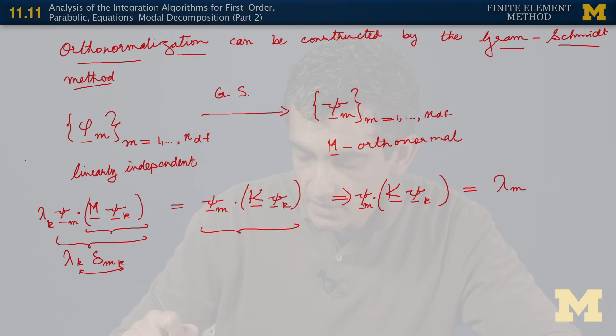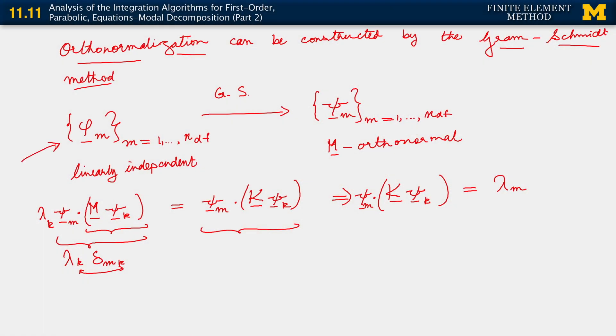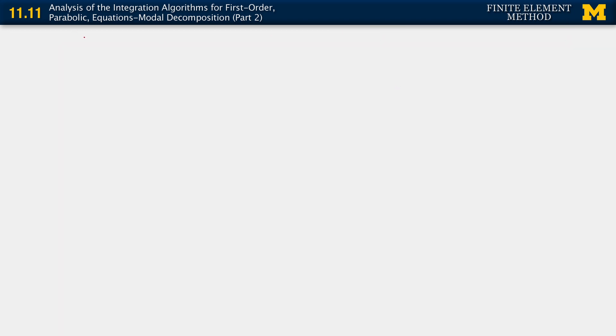Because we started out with a set of linearly independent vectors phi m and we proceeded to orthonormalize them, we also know that this set is linearly independent. Therefore, it spans the space that we are working in.